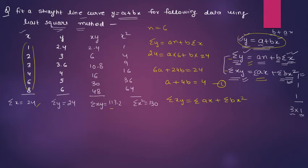Now sigma xy is 113.2. A you can take out, sigma x is 24. B you can take out, sigma x square is 130. So that means 24a plus 130b equals 113.2.